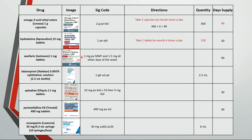Warfarin dosing can be tricky but writing out all the steps makes it much easier. The directions are: take one tablet by mouth on Monday, Wednesday, and Friday; take one and one-half tablets all other days of the week. Avoid saying 1.5 tablets because the patient might mistake that for 15 tablets — fractions like one-half are preferred. Make a table to see how many tablets the patient is taking in a week. For a 90-day supply there are 12.86 weeks, and if they're taking nine tablets every week, then we need 115 tablets.